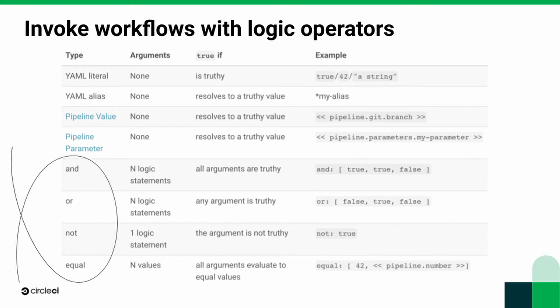Pipeline values — the values that we automatically add into your jobs, like pipeline.get.branch — would become a string value if you pushed to a branch and triggered a workflow on CircleCI. If you pushed a tag, pipeline.get.branch would be false because it would be an empty string. So you can use these pipeline values as arguments. Also, you can define your own arguments — these pipeline parameters that we let you define in your config. Maybe you have a parameter called my parameter, and it could be set as default to false, but it's possible to set it to true.